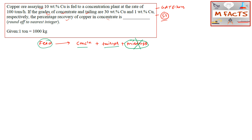Whenever you get this type of question, draw an input-output diagram: input equals output. The feed rate given is 100 tons per hour with 10 weight percent copper. The concentrate rate is unknown, so we assume it is x tons per hour, and this concentrate contains 30 percent copper as given in the question.